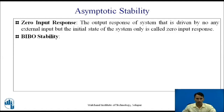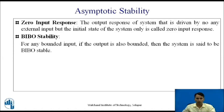When the output of a particular system is bounded with respect to bounded input, then that system is known as a BIBO stable system. If the output is not bounded for the bounded input, then it becomes an unstable system. So for any bounded input, if the output is bounded, then the system is said to be BIBO stable.